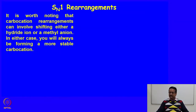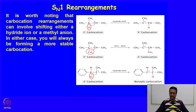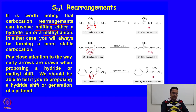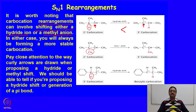In case of SN1 reaction, there may be a rearrangement of ions or atoms in the carbocation which can generate a more stable carbocation in a process called a hydride shift or a methyl shift. Carbocation rearrangements can involve shifting of either a hydride ion or a methyl anion. Here, a secondary carbocation undergoes a hydride shift from the adjacent carbon to the carbocation site with its electrons, generating a new tertiary carbocation which is more stable. As soon as this secondary carbocation is formed, this hydride shift is possible and it generates a more stable carbocation.